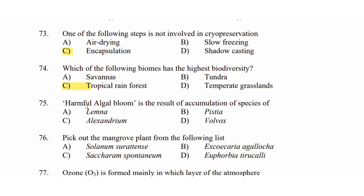Question 75: Harmful algal bloom is a result of accumulation of species of — Option A: lamna. Option B: pistea. Option C: Alexandrium. Option D: follows. It is harmful algal bloom. The answer is Option C: Alexandrium.